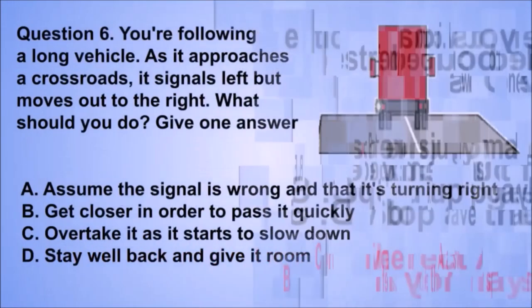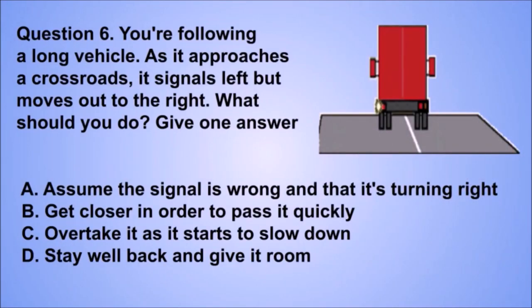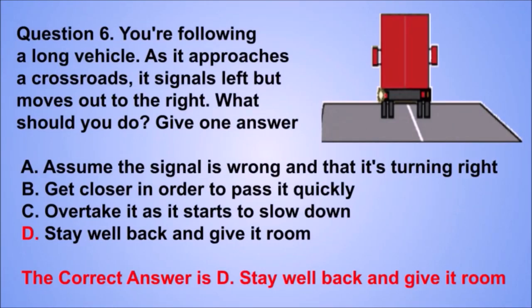Question 6. You're following a long vehicle. As it approaches a crossroads, it signals left but moves out to the right. What should you do? The correct answer is D: Stay well back and give it room.